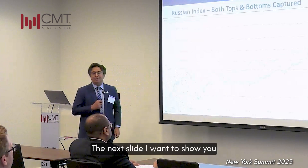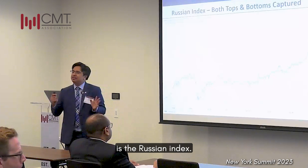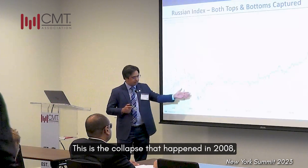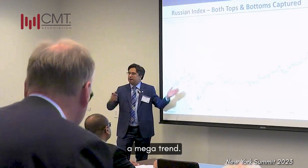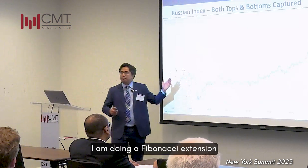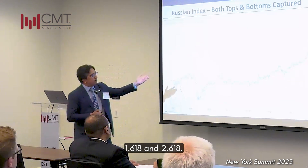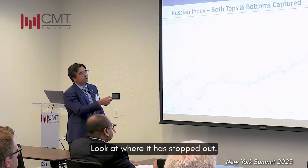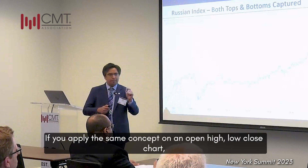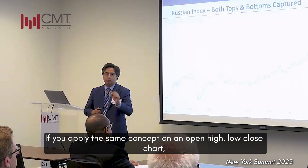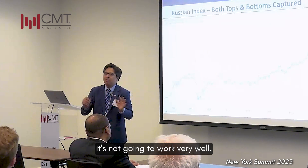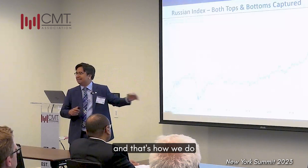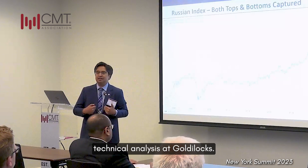The next slide I want to show you is the Russian index. Again I'm taking the 2008 fall — this is the collapse that happened in 2008, a mega trend. I'm doing a Fibonacci extension: 1.618 and 2.618. Look at where it has topped out. If you apply the same concept on an open-high-low-close chart it's not going to work very well, but on a closing chart it's worked brilliantly, and that's how we do technical analysis at Goldilocks.